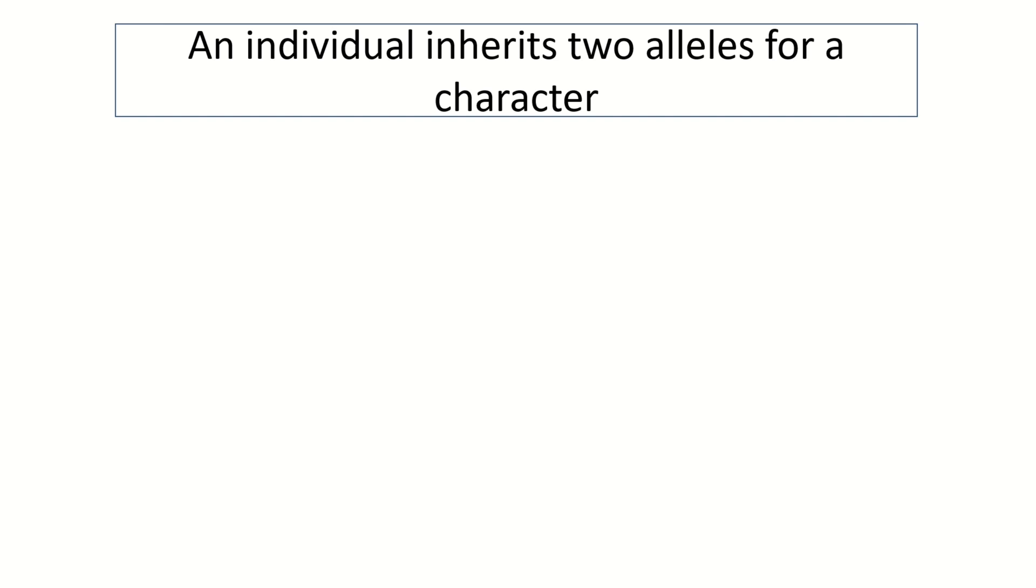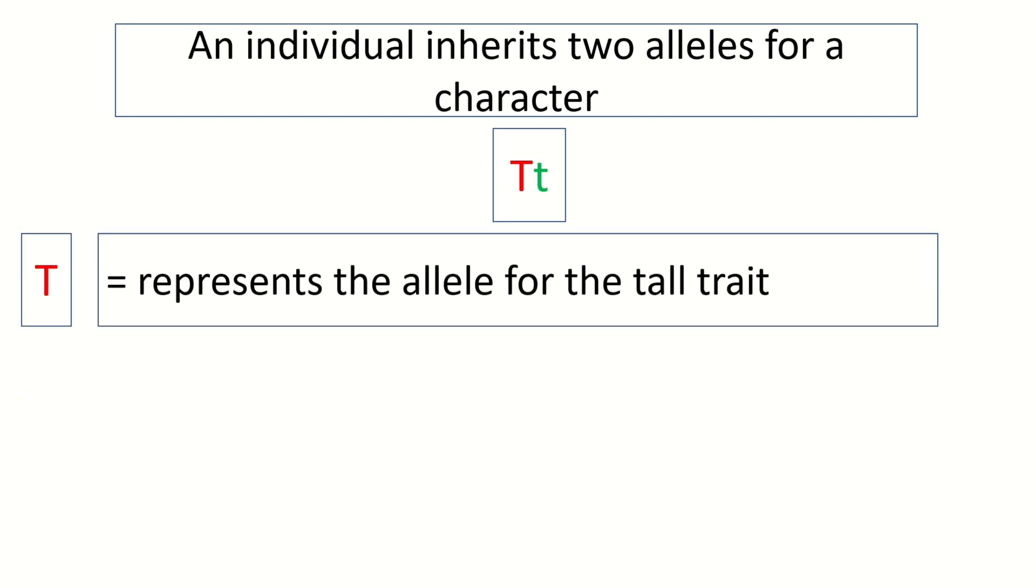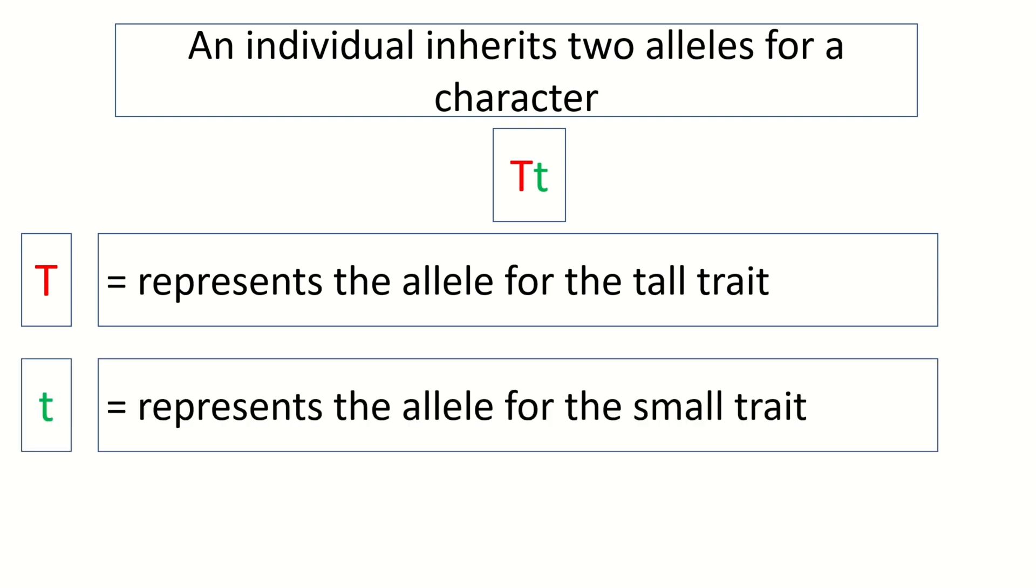Dominant and recessive. An individual inherits two alleles for a character. Letters represent the alleles. Capital T represents the allele for the tall trait. Small t represents the allele for the small trait.